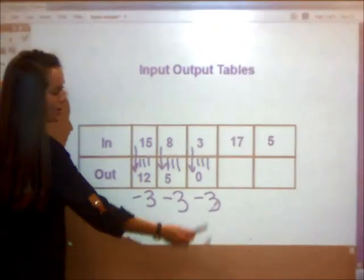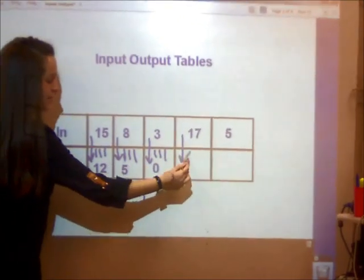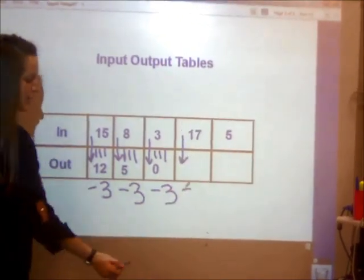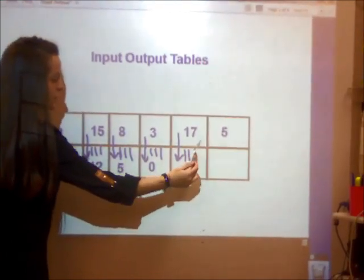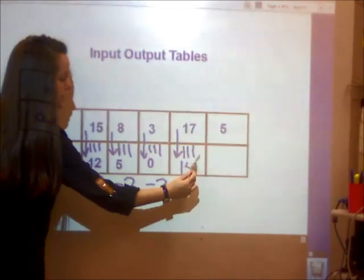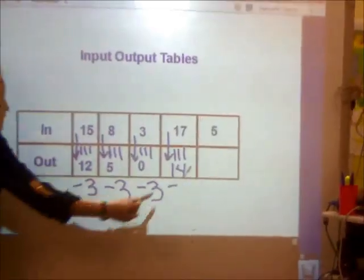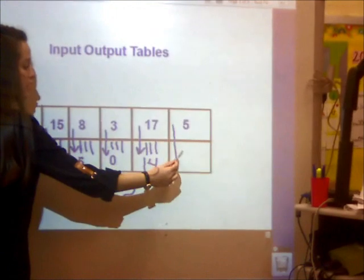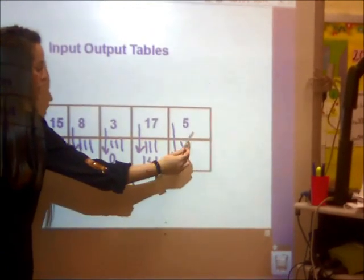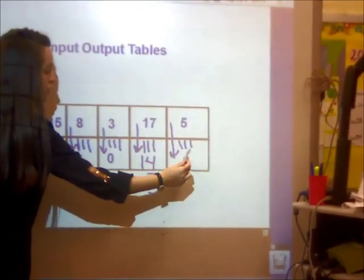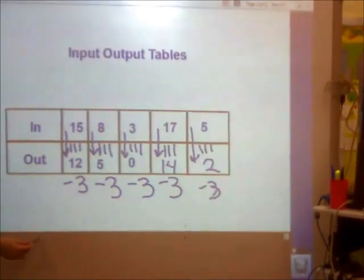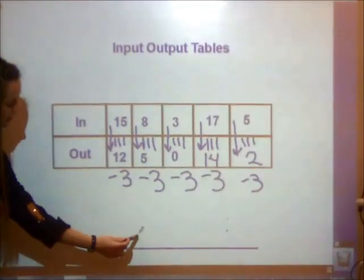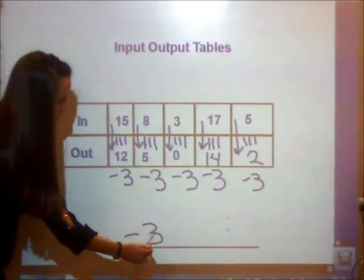Now that I've seen the pattern, I know that I must be taking away 3 from 17. 17, 16, 15, 14. So my output must be 14. 5, 4, 3, 2. 5 to take away 3 is 2. My rule must be subtracting 3.